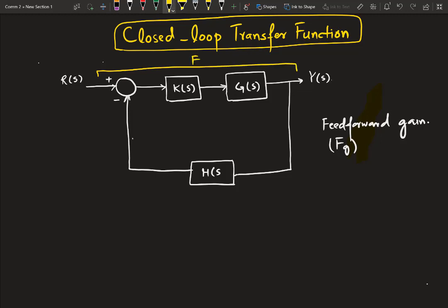So, this complete gain is denoted by FG, which is the feed-forward gain. And in our case, for this particular block diagram, this feed-forward gain comes out to be K of S into G of S. So, it will be the product of all the transfer functions encountered in this complete feed-forward path. So, this is our first gain.